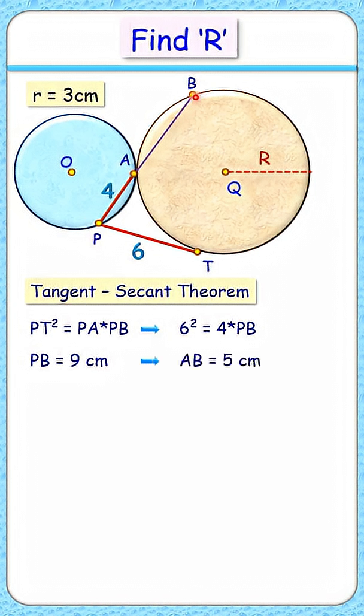Now two circles are touching each other. By theorem, their centers and point of contact lie on a straight line. Also, let's join OP. Here OA and OP these are the radius and thus 3 centimeter each.